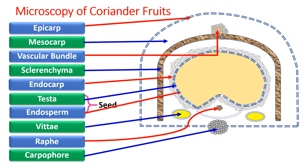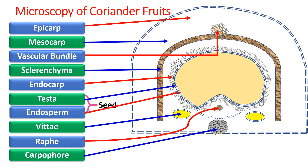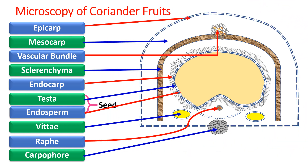The layers are quite similar to fennel fruit. These are cremocarpus fruits, and here I have shown only a single mericarp. The outermost layer is the epicarp, which is thin and cuticularized.